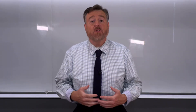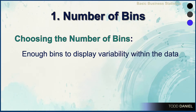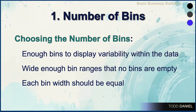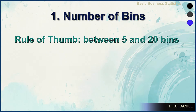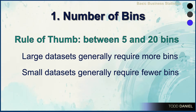Choosing the number of bins will depend upon your sample size. You want to choose enough bins that it displays the variability within the data, but not so many bins that you end up with bins that are empty. The bin width should always be equal. A good rule of thumb: between 5 and 20 bins would be optimal, depending upon the size of your data set. Large data sets will require more bins; smaller data sets, fewer bins.